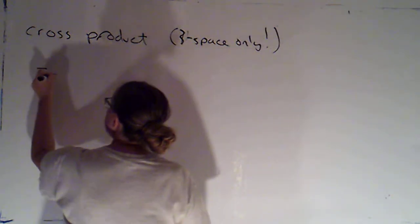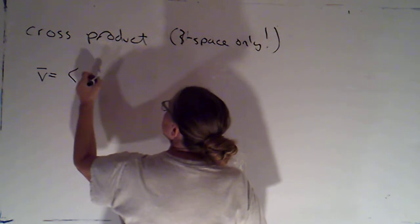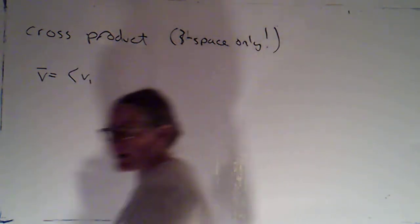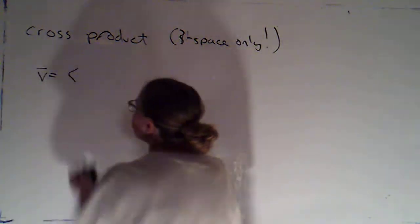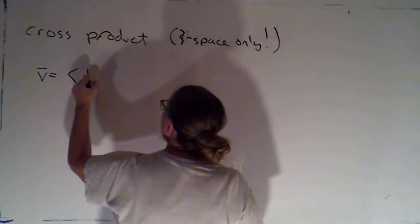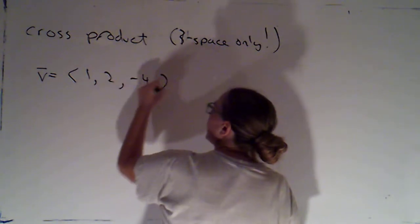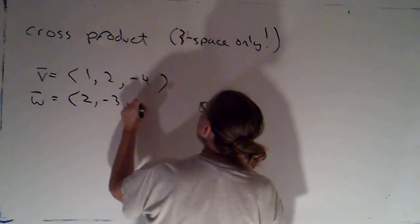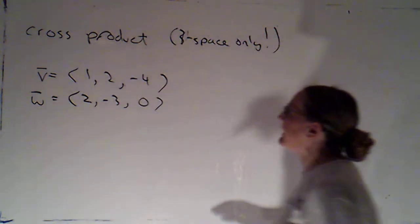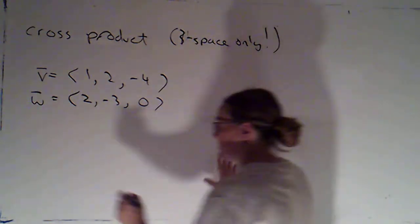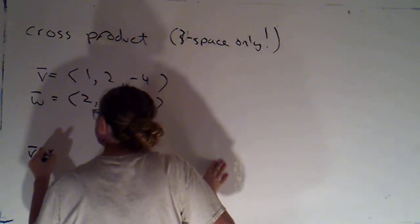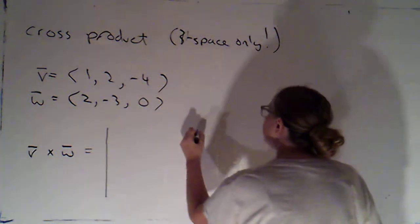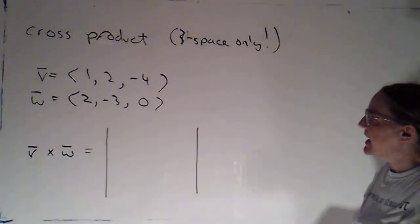If you ever find yourself taking the cross product of two vectors in two space, you are doing something wrong because that does not exist. So the cross product is in three space only. And here's how it works. Let's pick a specific example. Let's say v was 1, 2, negative 4. And let's say w is 2, negative 3, 0.